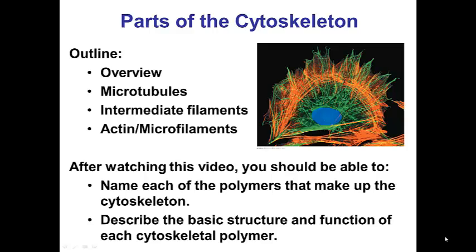In this video we'll be discussing the three polymers that make up the cytoskeleton: specifically the microtubules, intermediate filaments, and microfilaments, which are also known as actin. After watching this video you should be able to name each of these polymers as well as describe their basic structure and function.